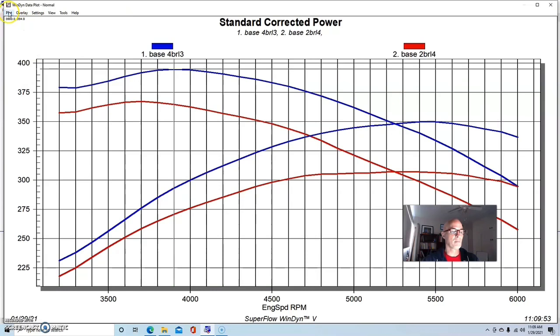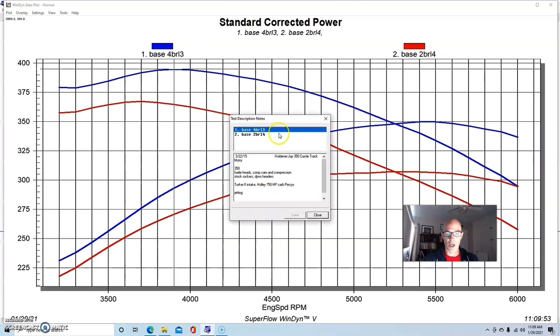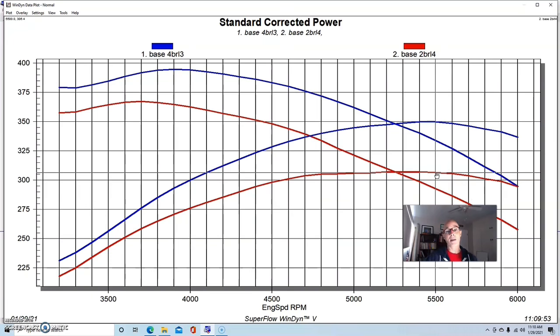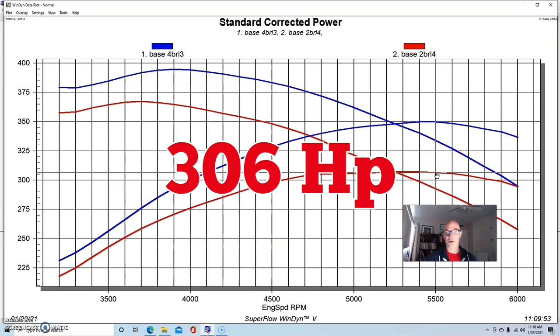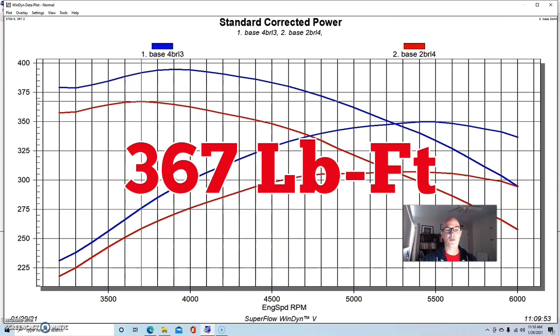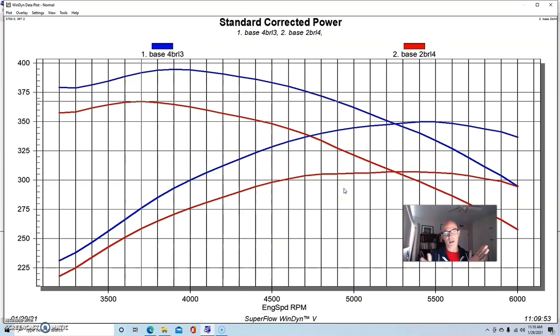Here's what happened when we installed the two barrel Holly. Obviously we lost a good bit of power. This was a spec carb for the racing class, which I think is a 4412, and again we did some jetting but we didn't find a lot with jetting in this combination. With the Torker II intake, the power output dropped with the two barrel down to 306 horsepower. Peak torque was down to 367 foot pounds.